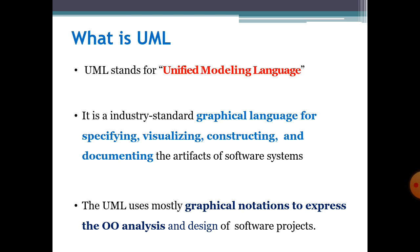UML is a general-purpose development modeling language tool in the software engineering field, which provides us a standard to visualize the design of a system — how we can visualize the design of a software in pictorial and graphical notation. Unified Modeling Language was actually developed by three scientists: Grady Booch, Jacobson, and Rumbaugh at Rational Software in 1994. These three people developed UML and how it performs.